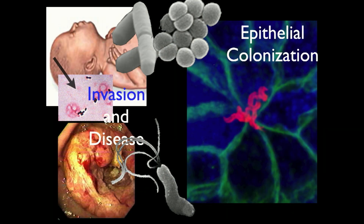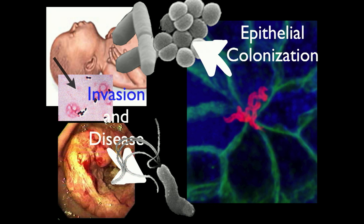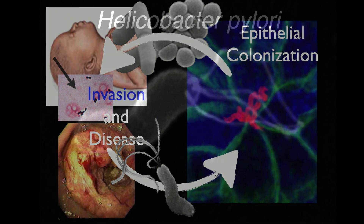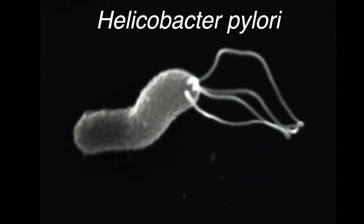H. pylori lives peacefully in most of us, and then in some people it causes disease. But 99.99% of the time, these bacteria just want to live peacefully near our epithelial surfaces. Nobody dies of H. pylori bloodstream infections, and none of those bacteria benefit from causing disease. So what I want to understand is how virulence factors are involved in colonization, and how pathogenesis and colonization are related. Practically, we need to decolonize some of us from these bugs.